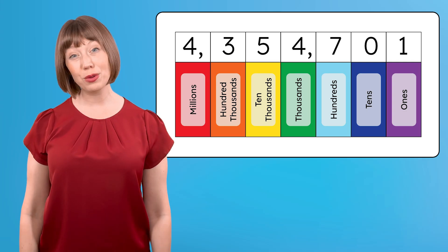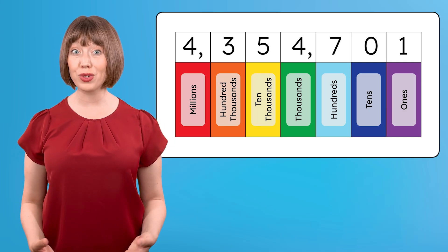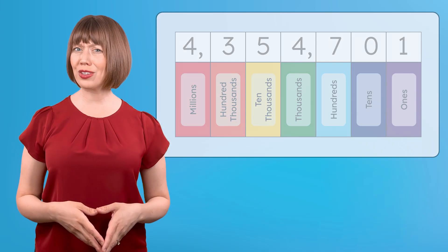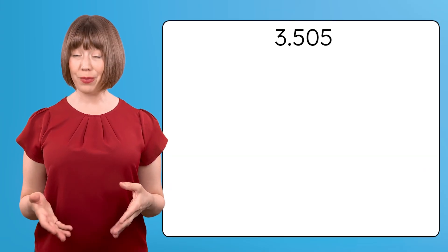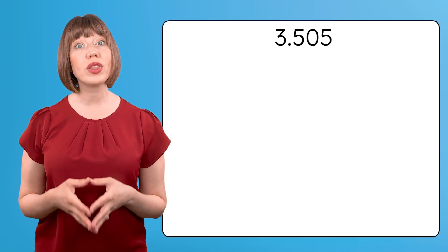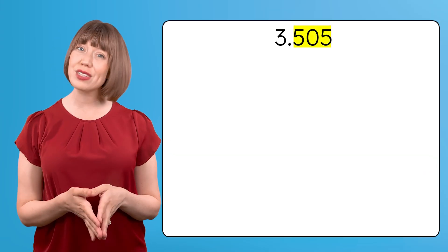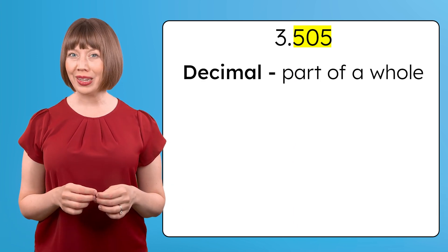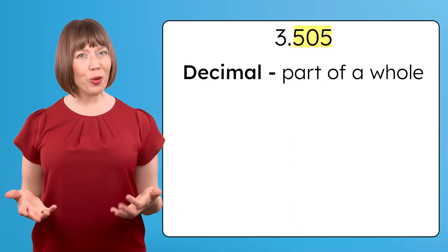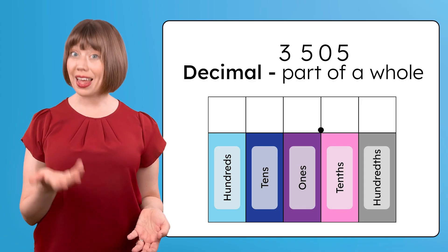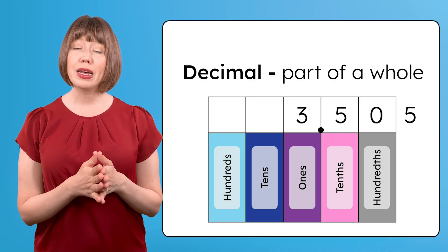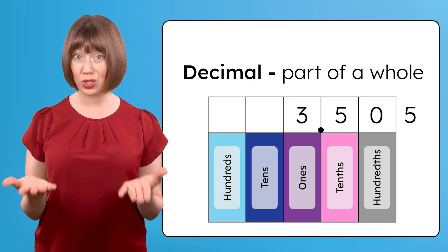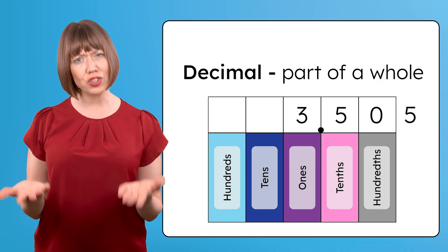In our last lesson, we practiced working with whole numbers to the millions place. But our challenge today is a little different. We're working with a number with decimal place values. A decimal represents part of a whole. We're already familiar with decimals in the tenths and hundredths place, but what about decimals that have more than two digits, like the number from our challenge?